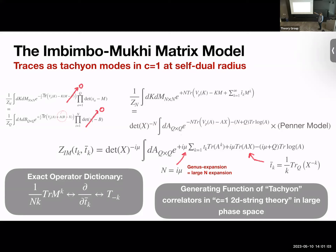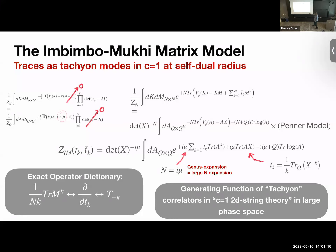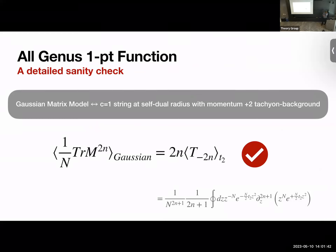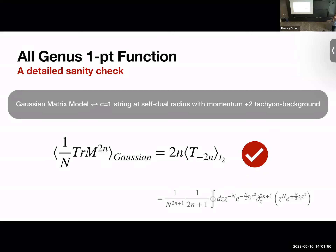Because everything is exact, this gives an exact operator dictionary between trace M to the k and tachyon operators in the c=1 theory. As a sanity check, this was actually first noticed in a calculation in 1997 — researchers started at low genus and noticed these two things were equal without understanding why. Specifically, the Gaussian matrix model corresponds to turning on a momentum-plus-two tachyon in the c=1 background, and the one-point function of these tachyon operators can be computed to all genus on both sides, and they agree.